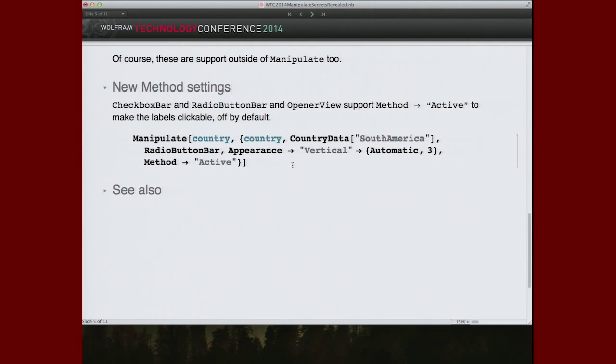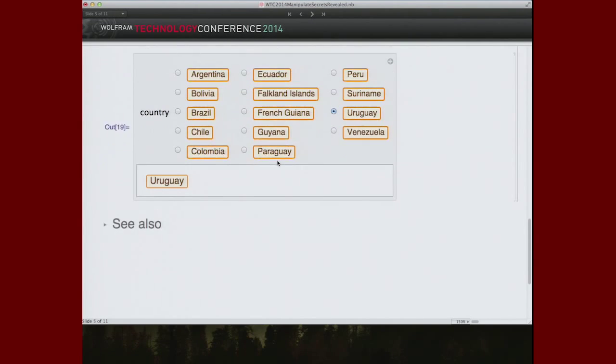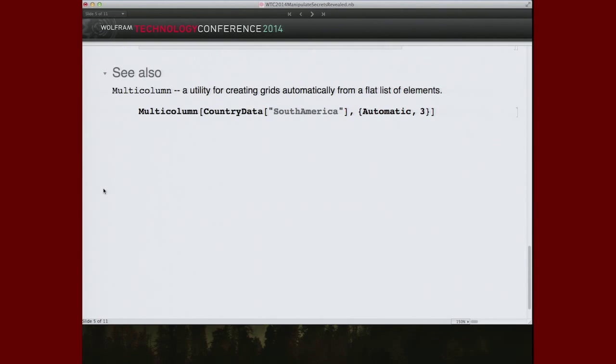Also, another nice change to checkbox bar and radio button bar. It used to be the case that you had these beautiful displays, but you have to find the little control to press instead of pressing anywhere on the label. There's a new convenience method active that says, go ahead and click anywhere you want and these things will be activated. Something we could have done from the beginning and maybe we should have done from the beginning and it's now available. Those of you that are interested in columnar layout may also be interested in a new in version 10 function multi-column that does this automatic padding and laying out into columns arranged either horizontally or vertically.